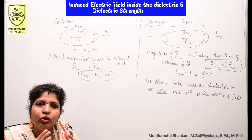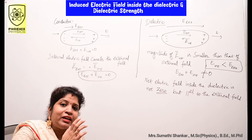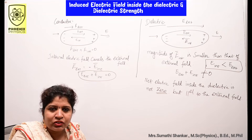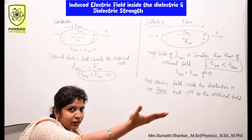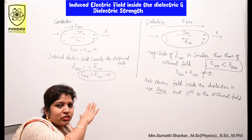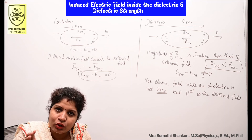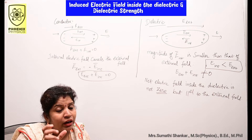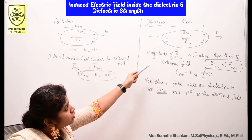Dielectrics have no free electrons, so the external electric field realigns the charges — the positive charges are moved to one side of the dielectric and the negative charges are moved to the other side. An internal electric field is produced, just opposite to the external field,